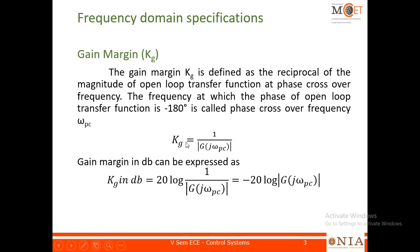If you want gain margin in dB, you apply 20 log, so it becomes minus 20 log of G(jω) at the phase crossover frequency. The frequency you supply is the phase crossover frequency — find the G value and apply log to get the gain margin in decibels.